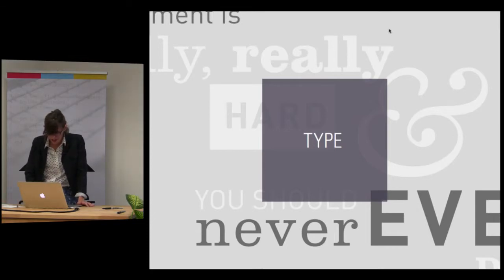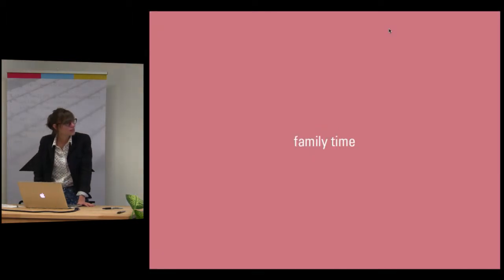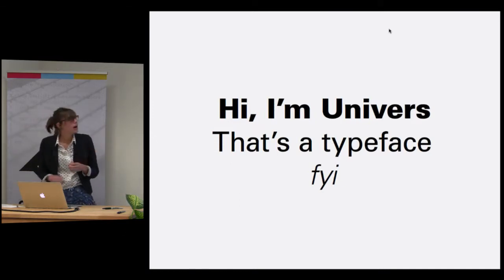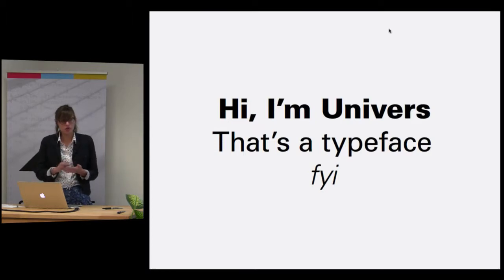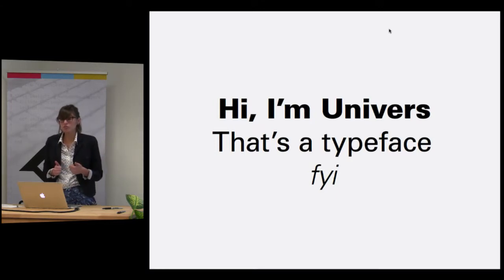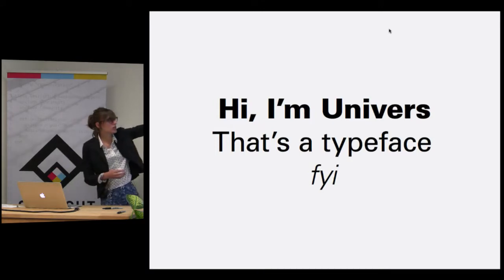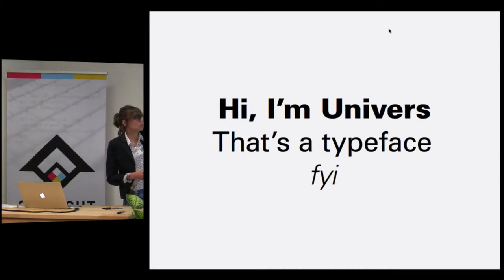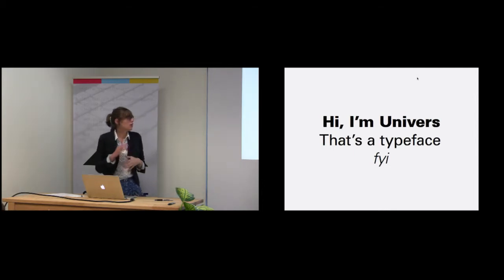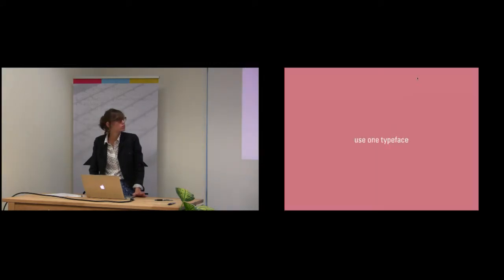Ampersands — I could talk about those for hours. But on to typeface families. When choosing a typeface, stick to one that has a few different weights. Typically if you can get bold, normal, and italic, you're good to go. You get variety — all one typeface, all the same size and color — but you still get 'this is really important,' 'kind of important,' 'a little bit important.' Different levels, all tied together.